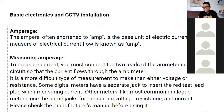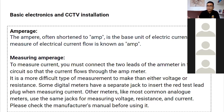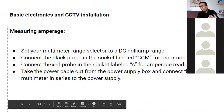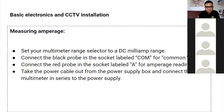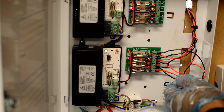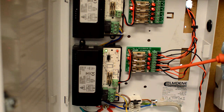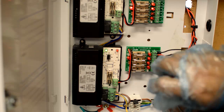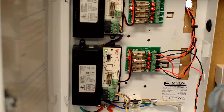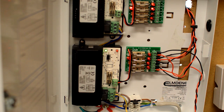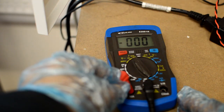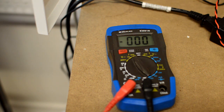Measuring amperage is different — the multimeter must be placed in series with the circuit. Be cautious with high voltage; using a clamp meter is a safer option. In the demonstration, I disconnect the positive red cable from the power supply to break the circuit, then set the multimeter to the 10A setting so it can read higher than 250mA.